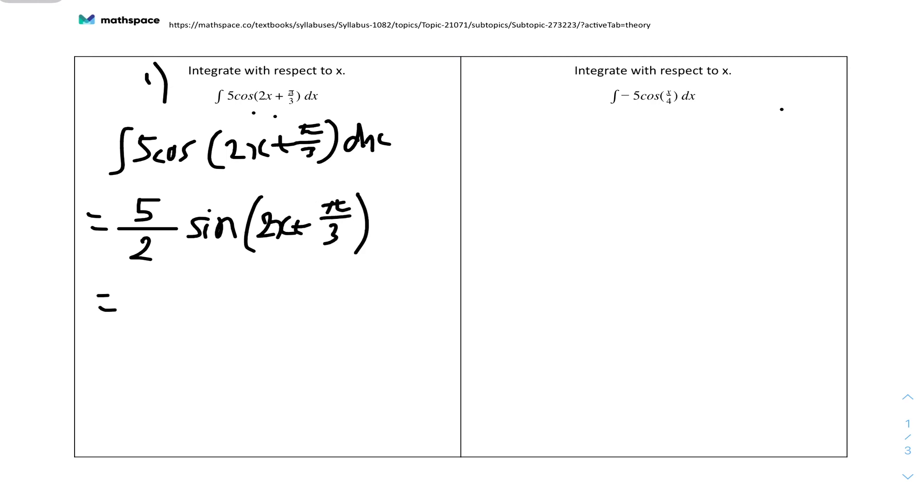Let's just rewrite it in a new color because we can't forget the plus c. So it will be 5 over 2 sine(2x plus pi over 3) plus c. And that's the answer.